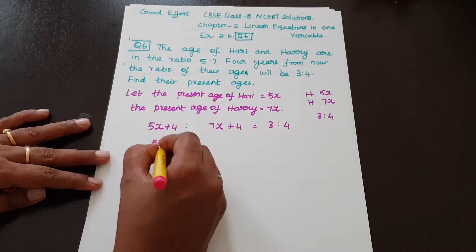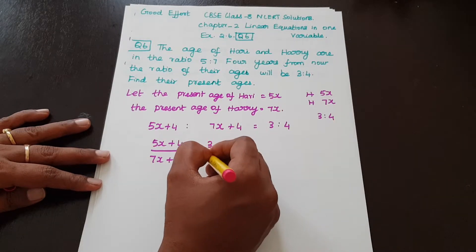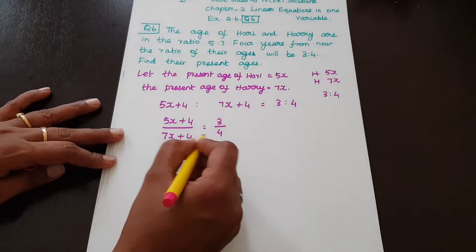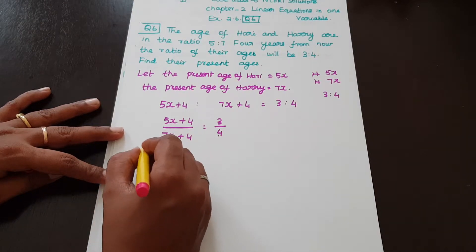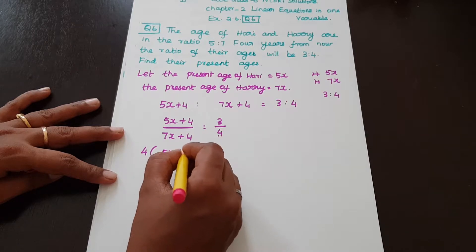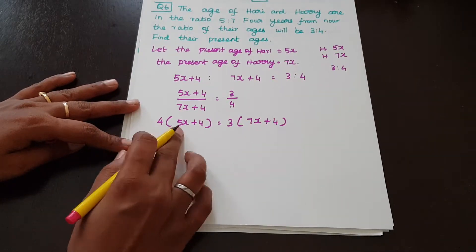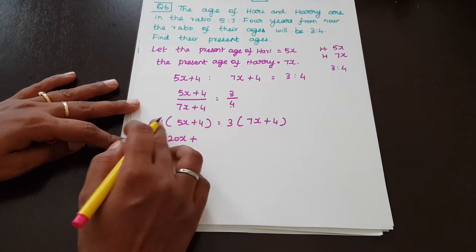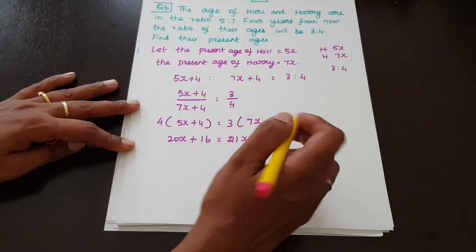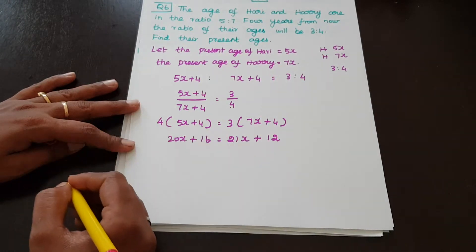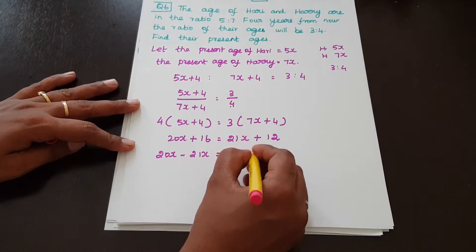So 4 years from now: (5x + 4) is to (7x + 4) equals 3 is to 4. Cross-multiplying: 4 into (5x + 4) equals 3 into (7x + 4), giving 20x + 16 equals 21x + 12.